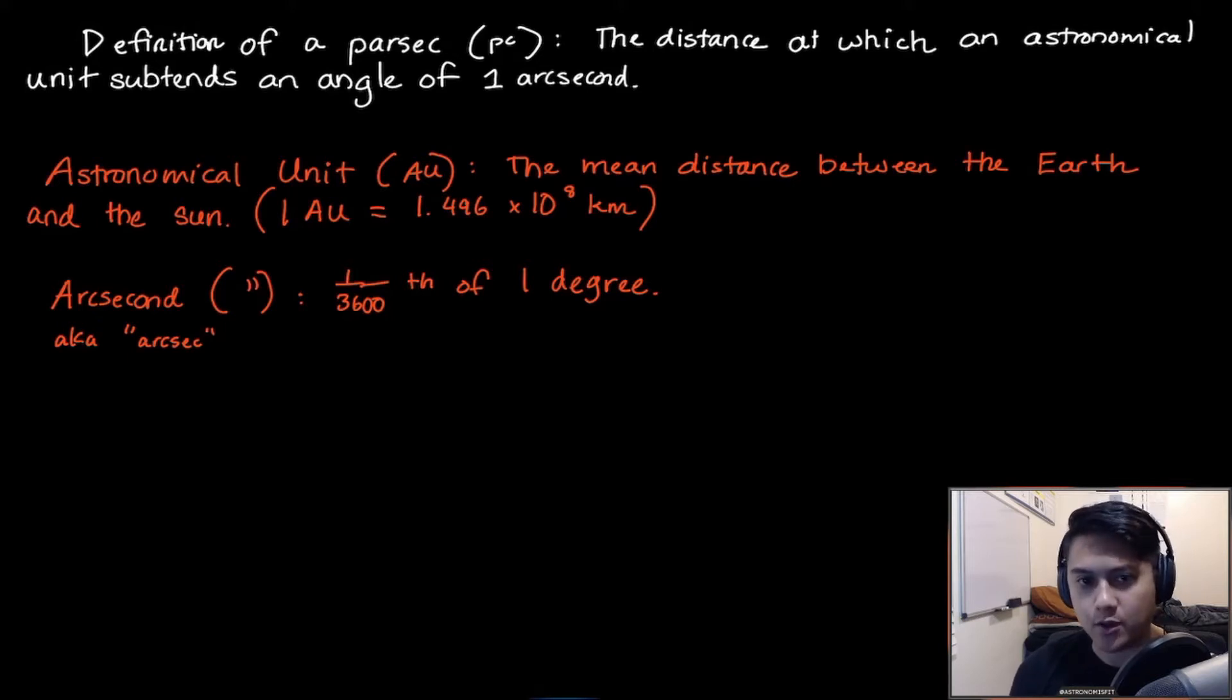Let's go ahead and define what an astronomical unit and an arcsecond are. An astronomical unit, or AU, is just the mean distance between the Earth and the Sun. And an arcsecond, or arcsec for short, is simply 1 over 3600 of one degree. So you need 3600 arcseconds in one degree. If you recall, a circle has 360 degrees in it, so it has quite a bit of arcseconds in it as well.